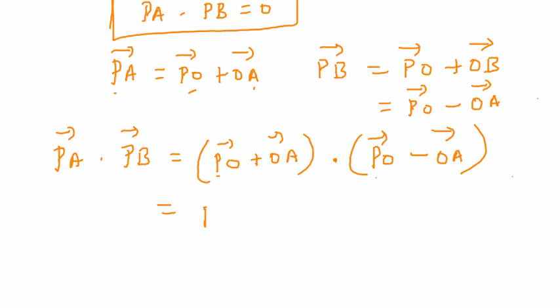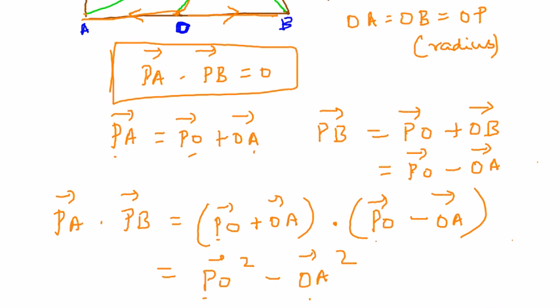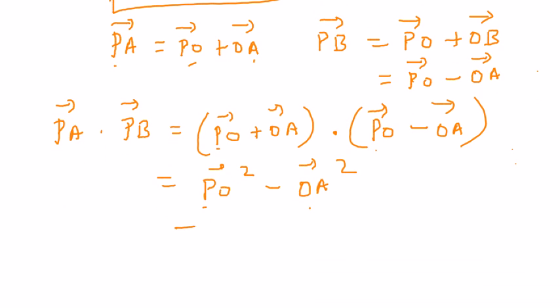It is PO vector squared minus OA vector squared. So since this is nothing but the radius, PO OA, we know that they are all the same because it's the radius. So since it's the same, this will be 0.